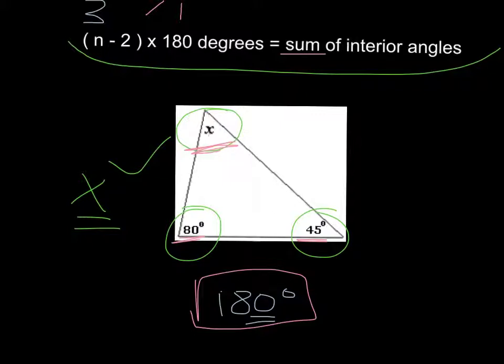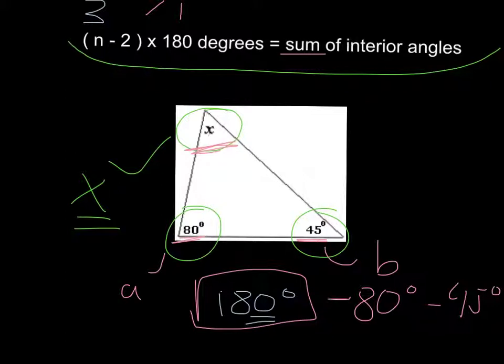In this case, we have 180, and we subtract. We take away this one. Let's call it angle A and angle B. So we take away angle A, that's minus 80, and take away the other one, which is minus 45. And then what we have left is our actual angle x.